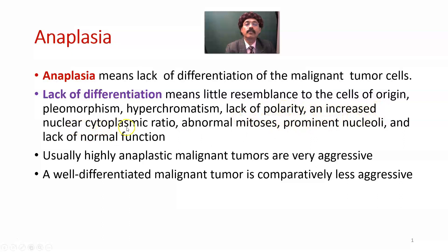An increased nuclear-cytoplasmic ratio. Normally it should be 1:4, maybe 1:5 or 1:6. But here it will go to 1:1. The entire nucleus may occupy the entire cell, so it almost looks like a lymphocyte — a very large nucleus with a peripheral rim of cytoplasm. So instead of 1:4 or 1:6, the nuclear-cytoplasmic ratio here will be close to 1:1.